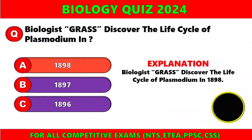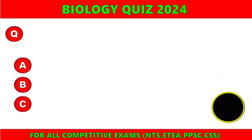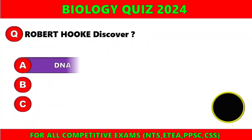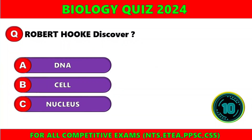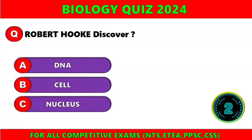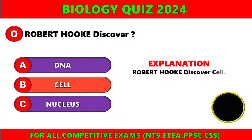The right option is B — 1897. Biologist Ross discovered the life cycle of Plasmodium in 1897. Robert Hooke discovered a) DNA, b) cell, c) nucleus. The right option is B — Robert Hooke discovered the cell.